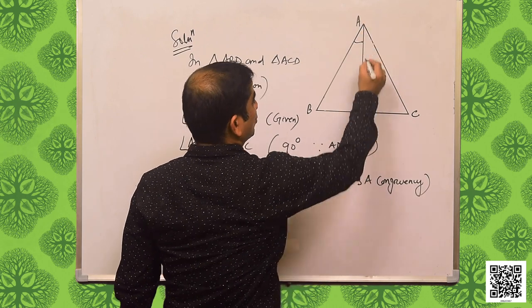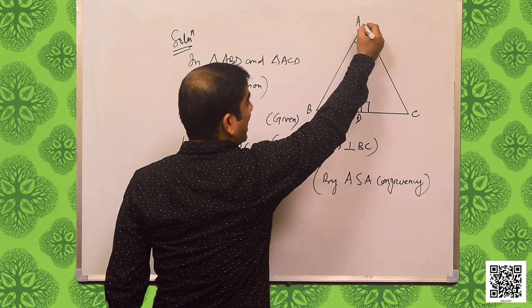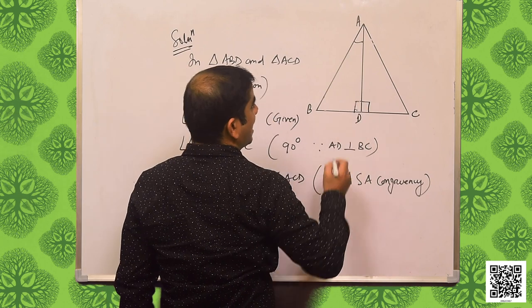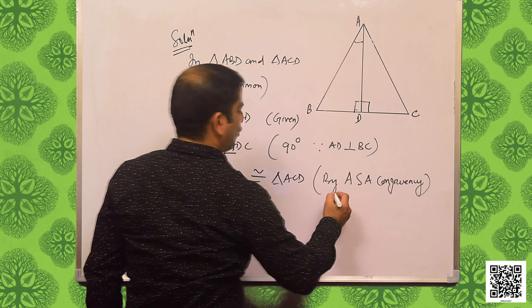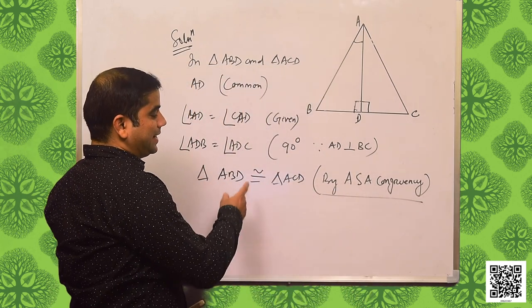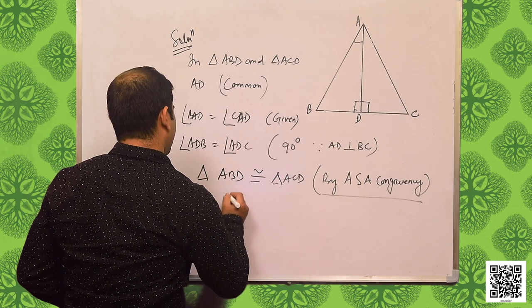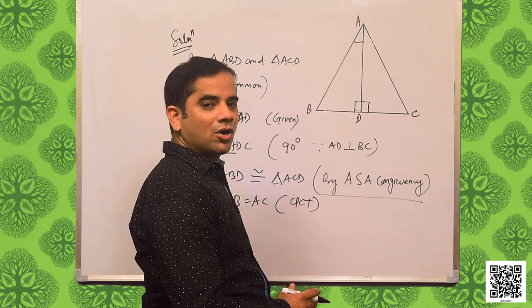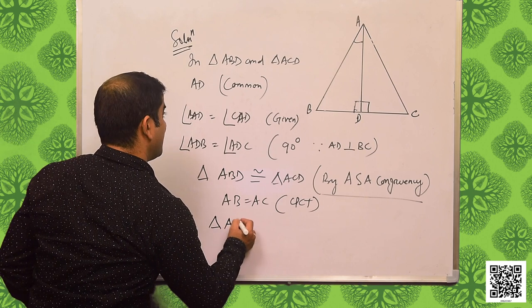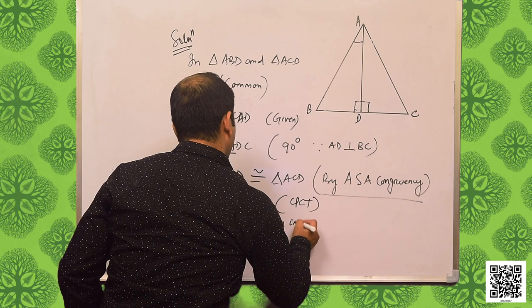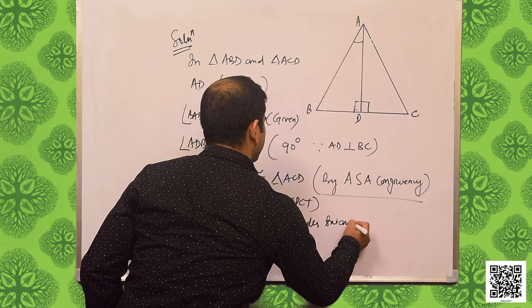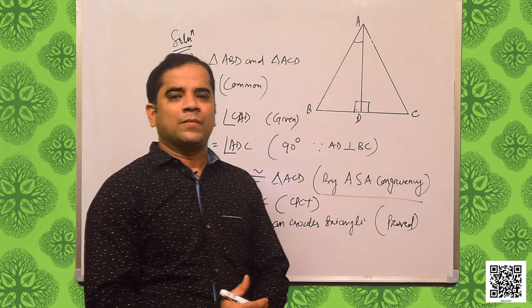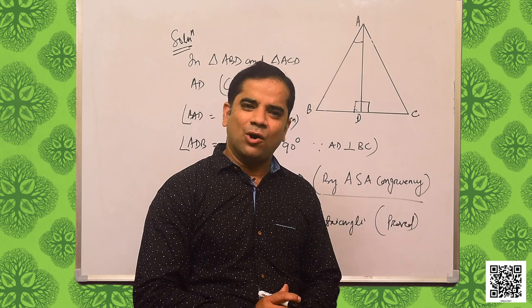So they are following ASA congruency. Triangle ABD is congruent to triangle ACD by Angle-Side-Angle congruency. As triangle ABD is congruent to triangle ACD, I can write AB is equal to AC by CPCT — corresponding parts of congruent triangles. That means triangle ABC is an isosceles triangle. We have proved it. Hope you have understood.